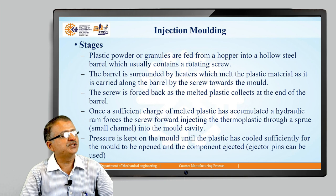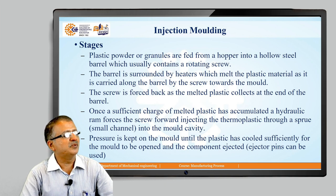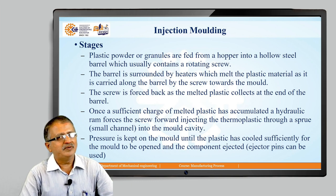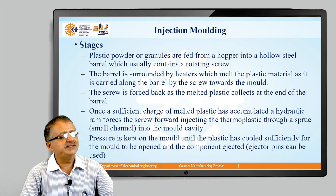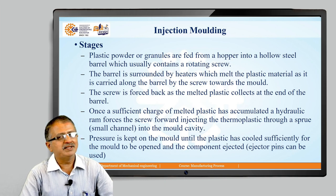Let us see the application of injection molding of plastic and its stages. First, plastic powder or granules are fed from a hopper into a hollow steel barrel which contains a rotating screw. The barrel is surrounded by a heater which melts the plastic material as it is carried along the barrel by the screw towards the mold. The screw is forced back as the melted plastic collects at the end of the barrel, and when a sufficient charge has accumulated, a hydraulic ram forces the screw forward injecting the thermoplastic through a sprue — a small channel — into a mold cavity. Pressure is kept on the mold until the plastic has cooled sufficiently for the mold to be opened and the component is ejected using ejector pins.